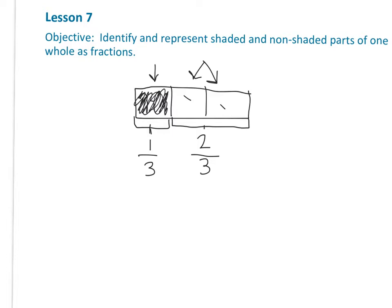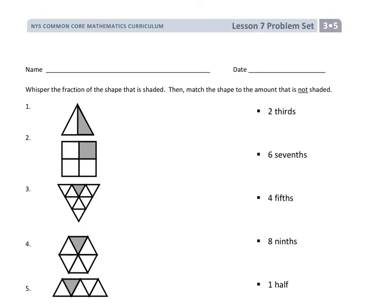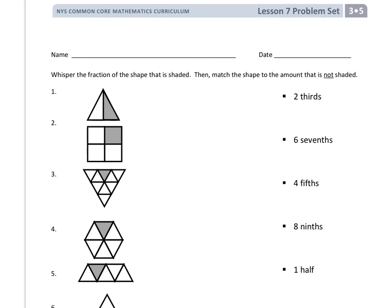And that's because two out of the three pieces are not shaded. Okay, let's go ahead and jump into the problem set now. It says to whisper the fraction of the shape that is shaded — you don't really need to do that. What you do need to do is recognize the part that is shaded and match the shape to the amount that is not shaded. This is the important part: not shaded.